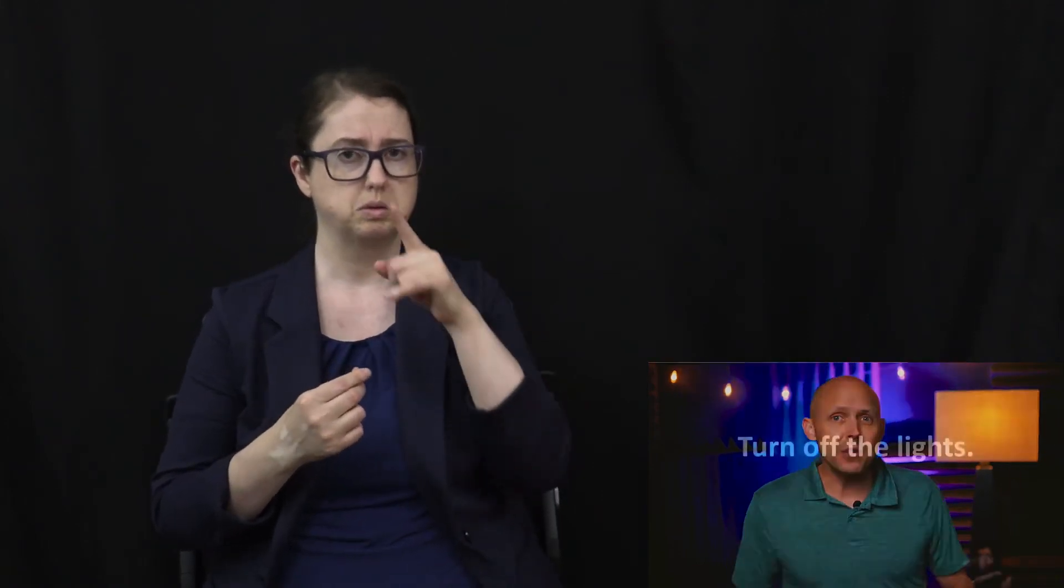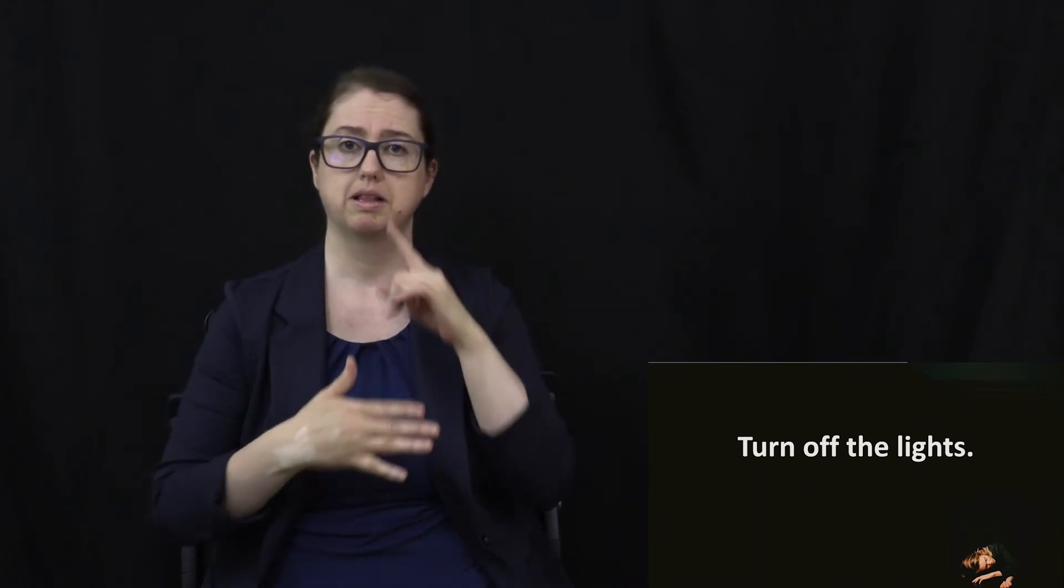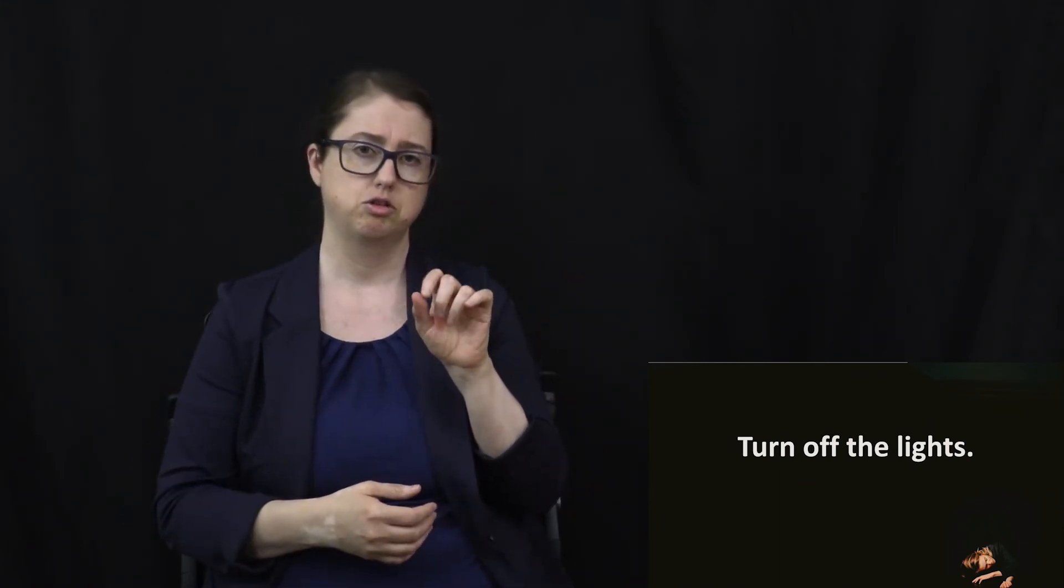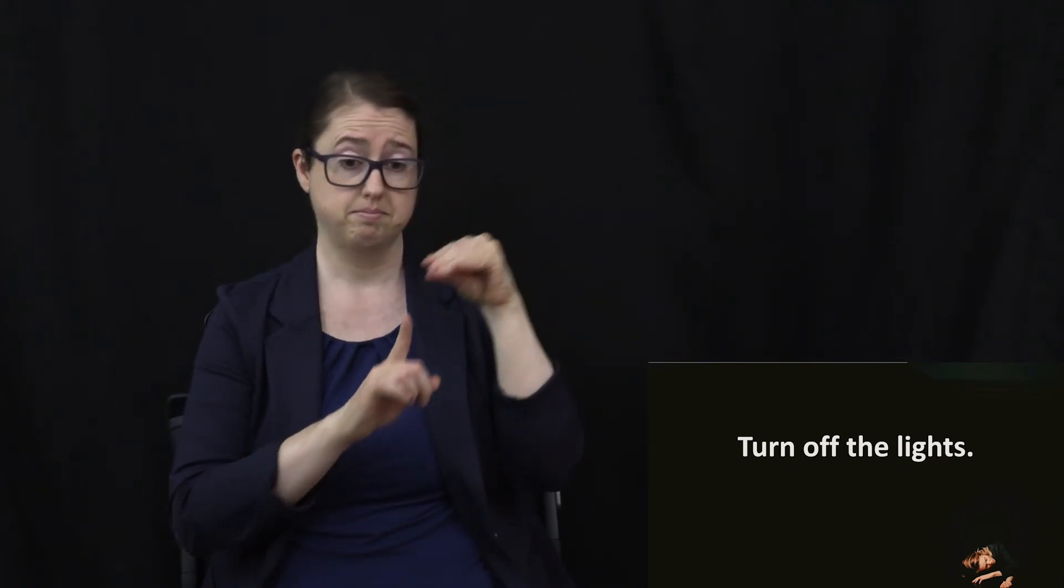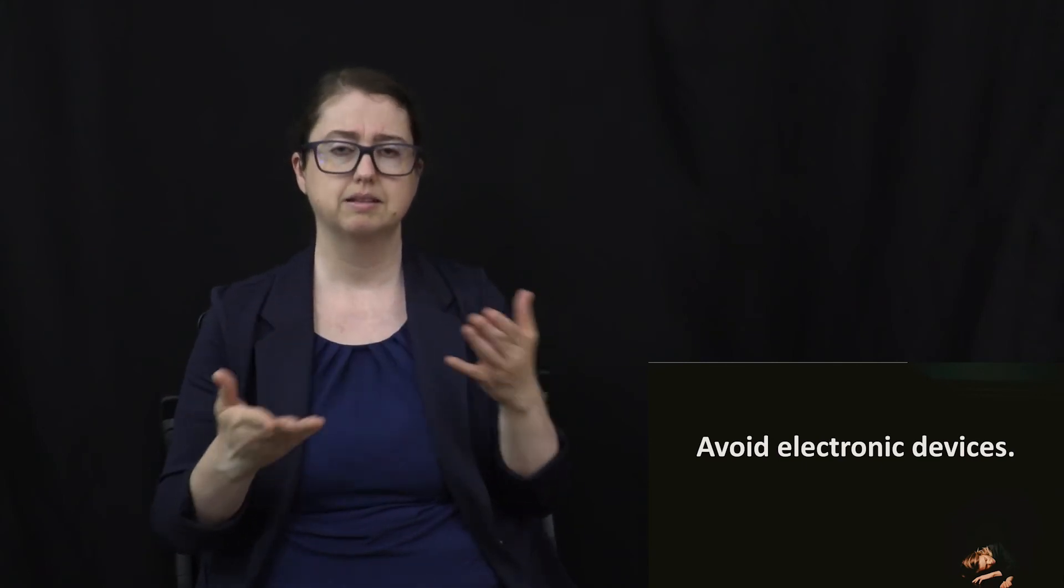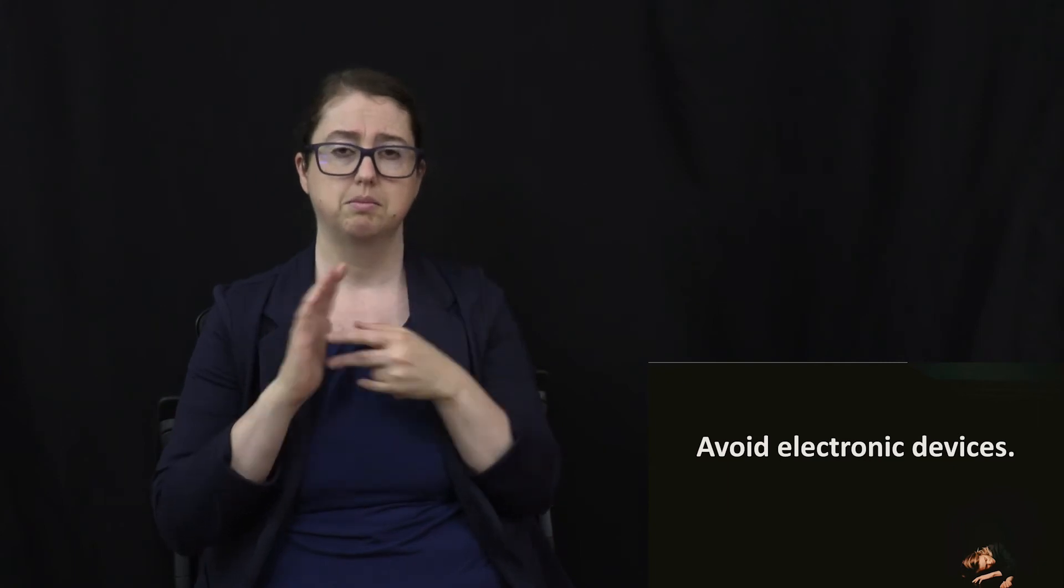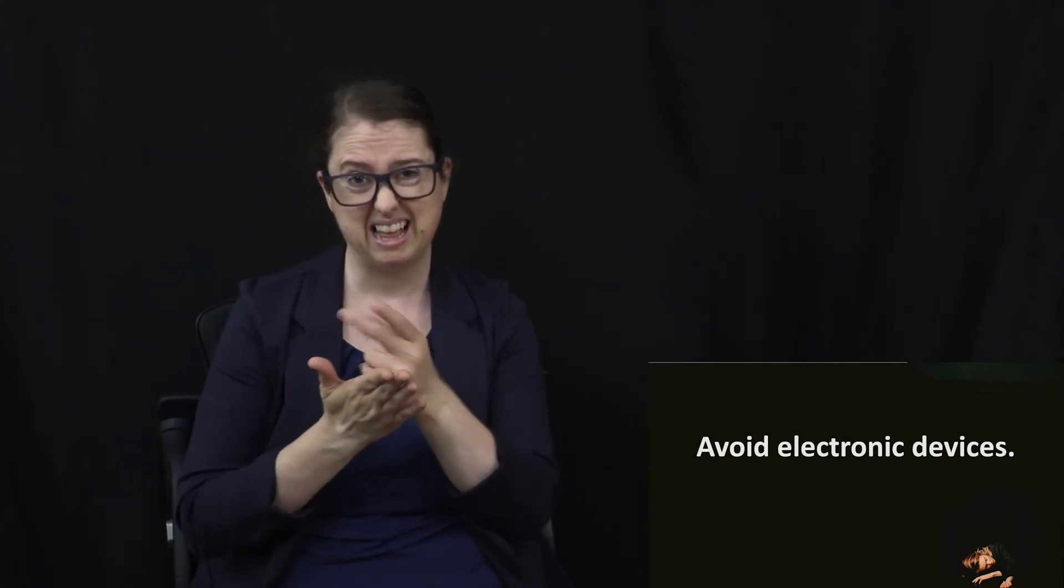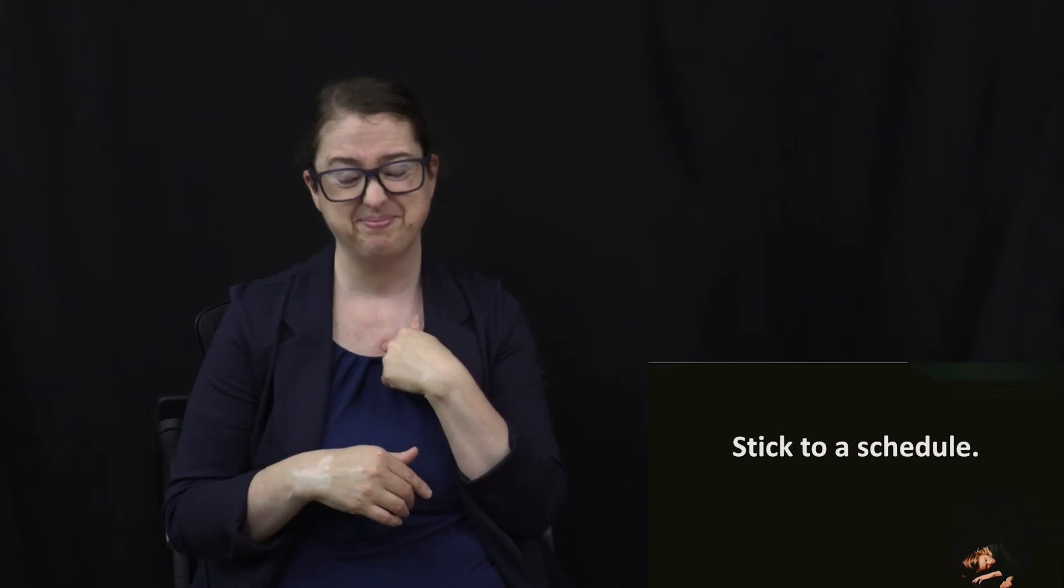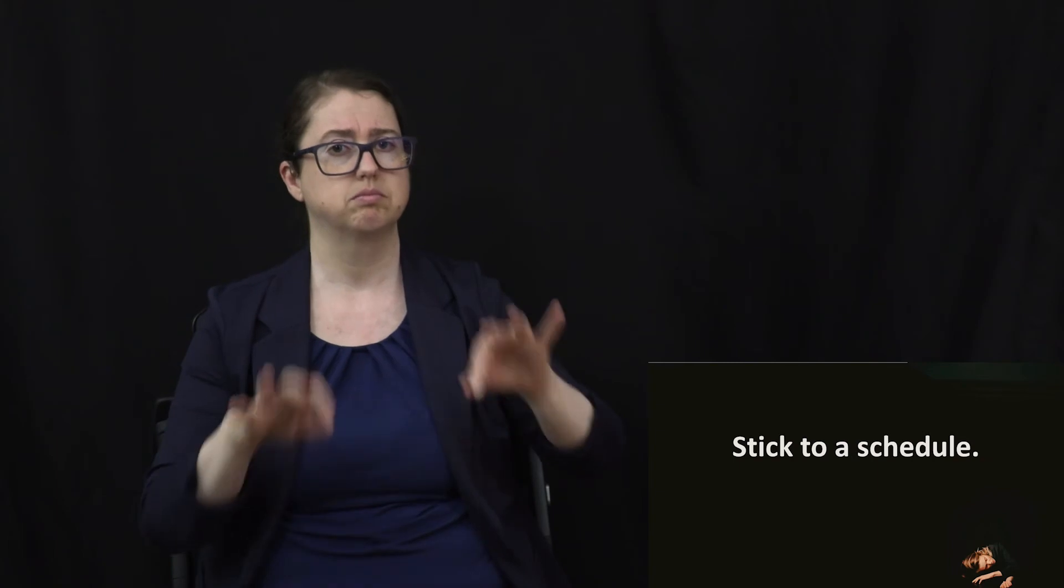So how do we get a better night's sleep? Here's what the experts say. Turn off the lights. This helps your body to release melatonin. Exposure to light after dusk can reduce melatonin levels by up to 71%. Avoid electronic devices. Lying in bed with a tablet or a cell phone hinders your body from wanting to fall asleep. I'll be honest, I've been guilty of that one.